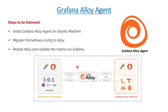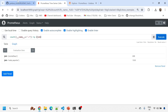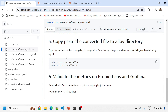Today we'll be installing Grafana Alloy agent onto an Ubuntu machine and migrating all the Prometheus configuration to Alloy. We have a Prometheus configuration capturing data from the Ubuntu machine and sending metrics to Grafana — Prometheus is added as a data source within Grafana. We'll migrate the configuration, restart Alloy, and verify that all metrics are properly coming into Prometheus and Grafana. There's also a GitHub page with all working session configs and sample configurations.